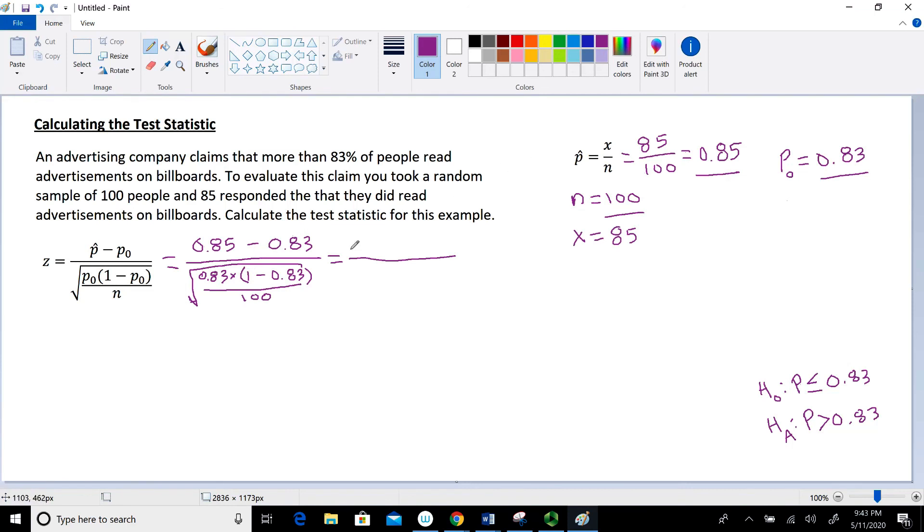So we want to be careful when we do this. So in the numerator, we have 0.85 minus 0.83, which is going to be a positive 0.02. And then in the denominator, when we take the square root of that big kind of messy thing, we end up with the value of 0.0376. Now I rounded that to four decimal places. You could round it to more than that or fewer than that. And then the last step for calculating our test statistic is to divide the numerator by the denominator. So we're going to take the 0.02 and divide that by the 0.0376. And that gives us a test statistic equal to 0.532.